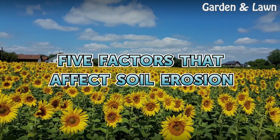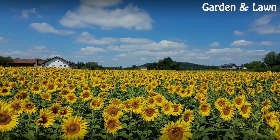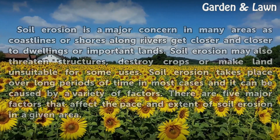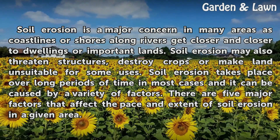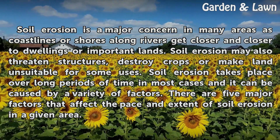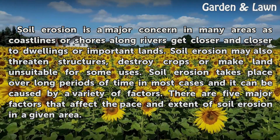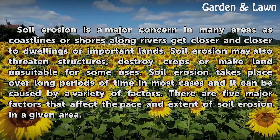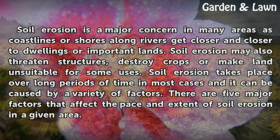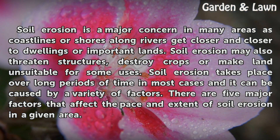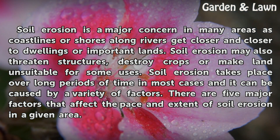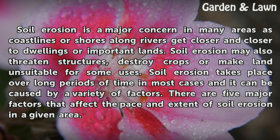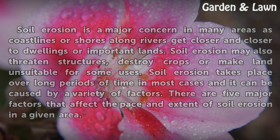Five Factors That Affect Soil Erosion. Soil erosion is a major concern in many areas as coastlines or shores along rivers get closer and closer to dwellings or important lands. Soil erosion may also threaten structures, destroy crops, or make land unsuitable for some uses. Soil erosion takes place over long periods of time in most cases and it can be caused by a variety of factors. There are five major factors that affect the pace and extent of soil erosion in a given area.